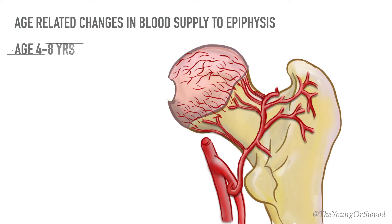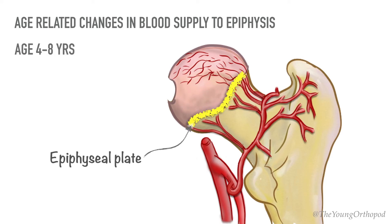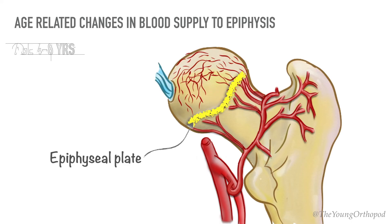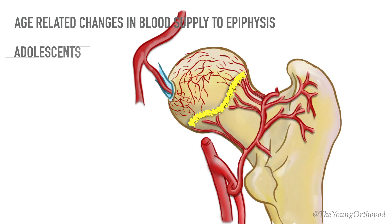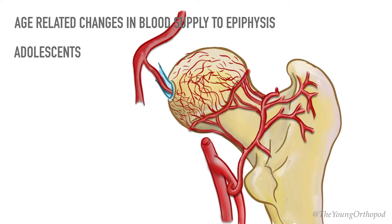During the age of four to eight years, the epiphysial plate becomes a firm barrier between epiphysis and metaphysis. Metaphysial branches decrease and blood from the separate lateral epiphysial vessels becomes the only source to the epiphysis. In a child more than eight years, ligamentum teres vessels progressively become prominent and anastomose with the lateral epiphysial vessels. After the closure of the physis, the arterial supply of the femoral head assumes the adult configuration, with supply from metaphysial, epiphysial, and foveolar arteries.